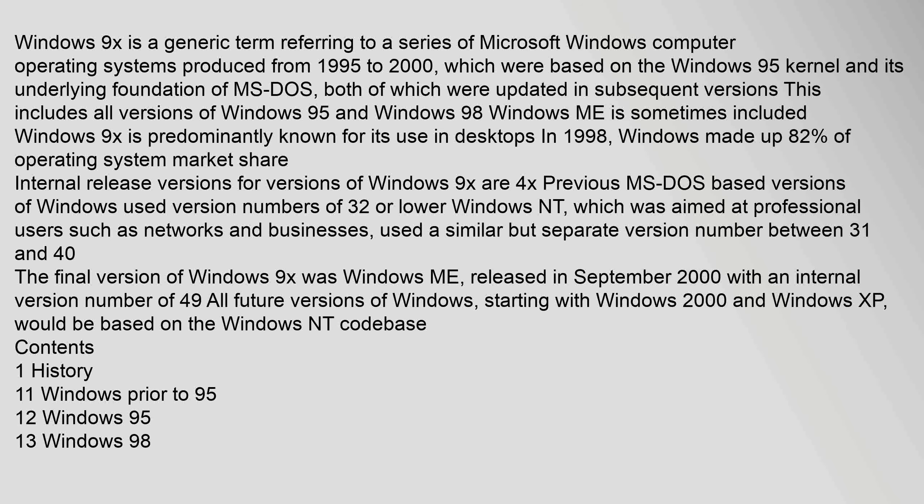The final version of Windows 9x was Windows ME, released in September 2000 with an internal version number of 4.9. All future versions of Windows, starting with Windows 2000 and Windows XP, would be based on the Windows NT codebase.